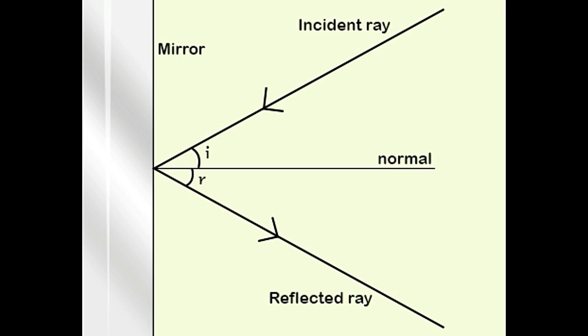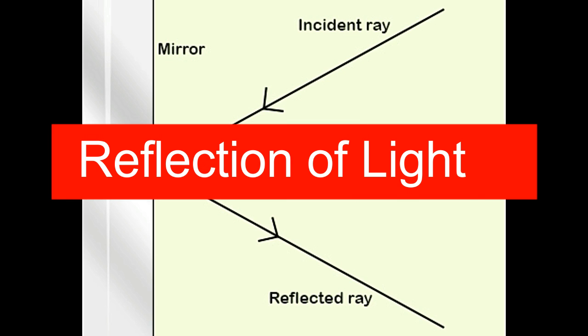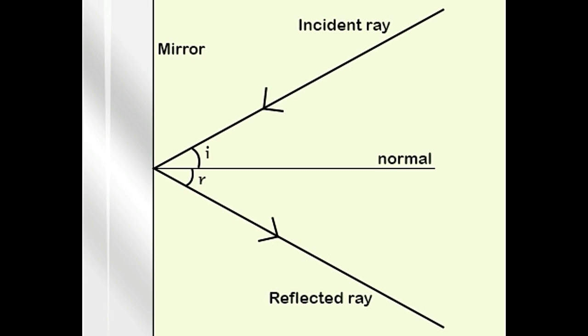Reflection is the phenomenon wherein a beam of light incident on an object bounces off, that is, reflects off its surface. The actual amount of light that is reflected depends on the composition and physical characteristics of the object.